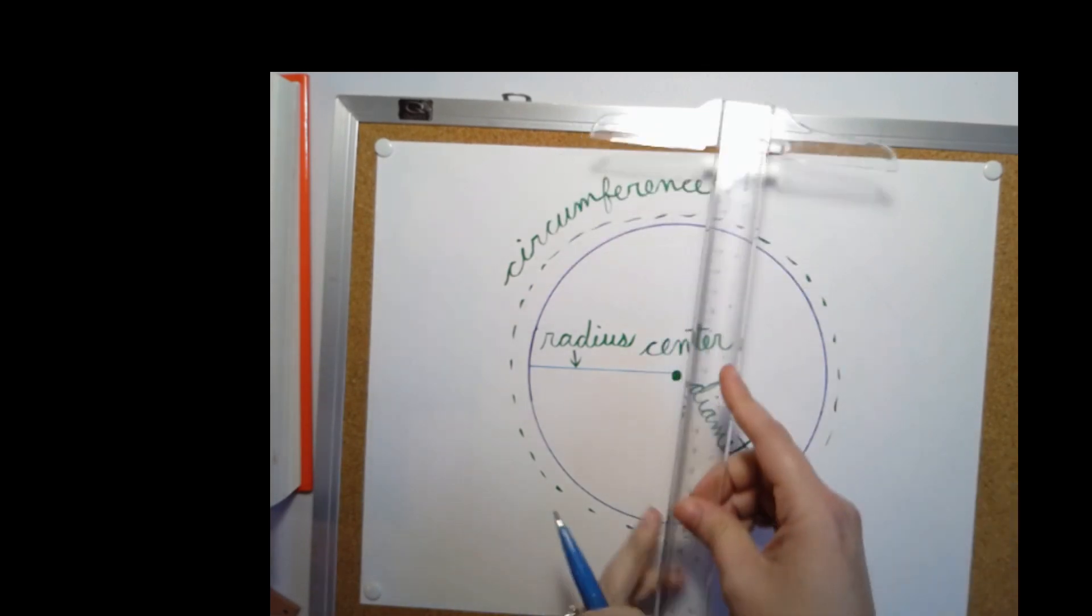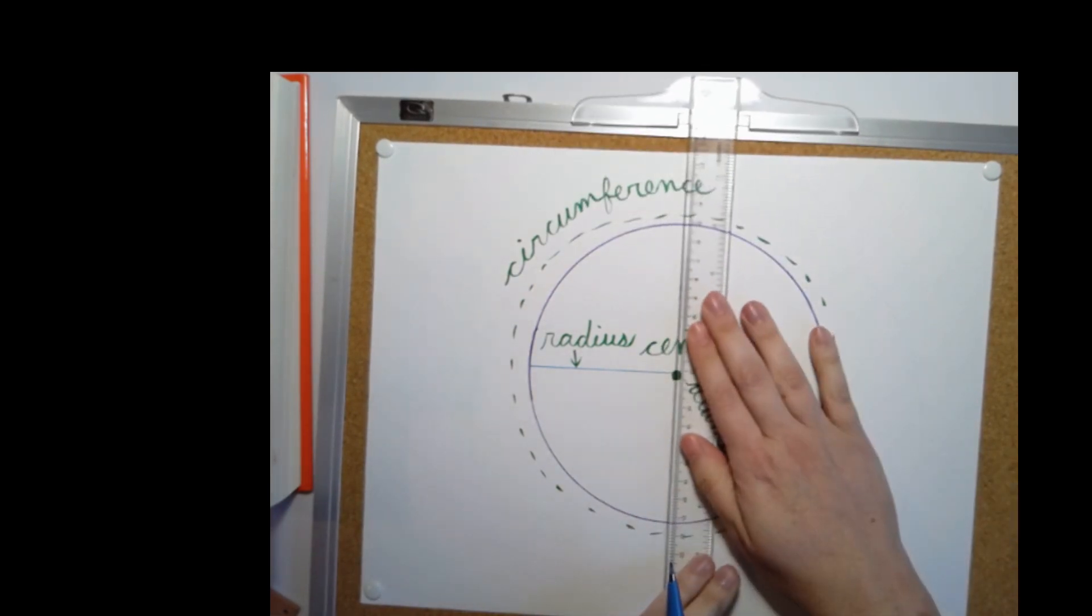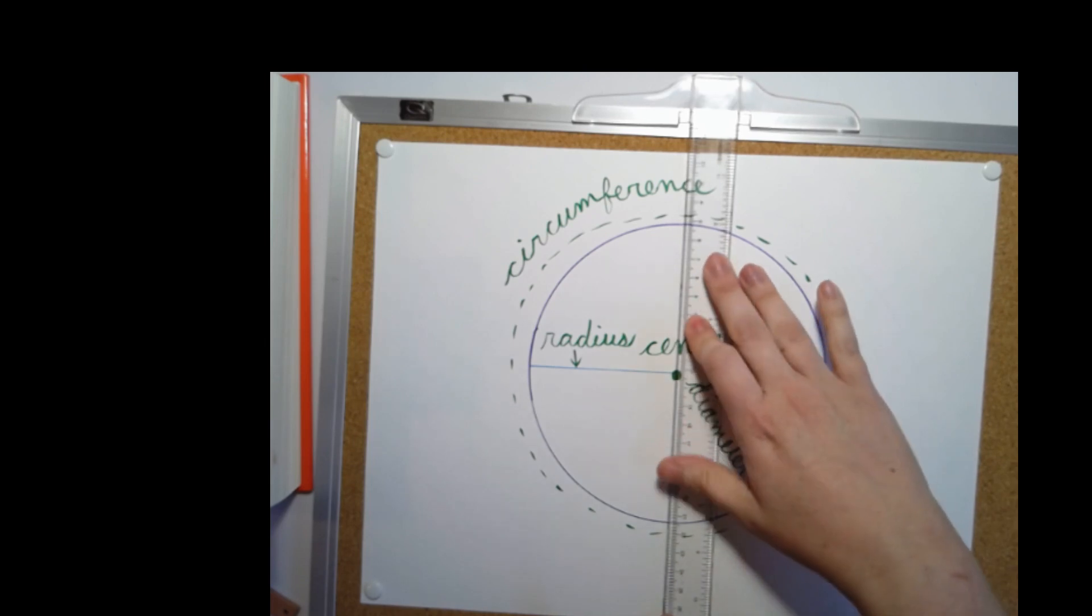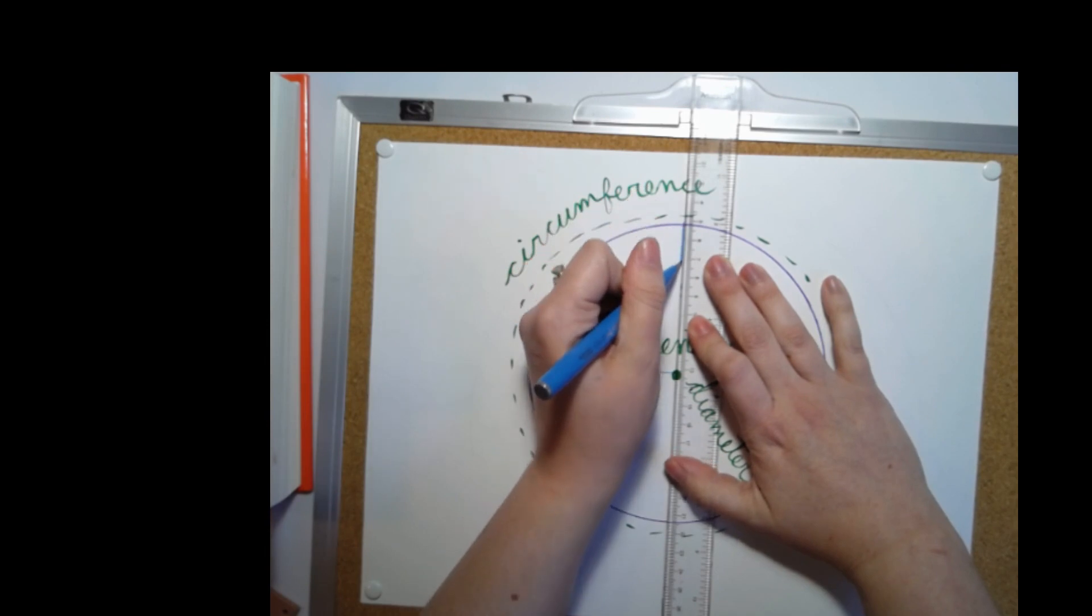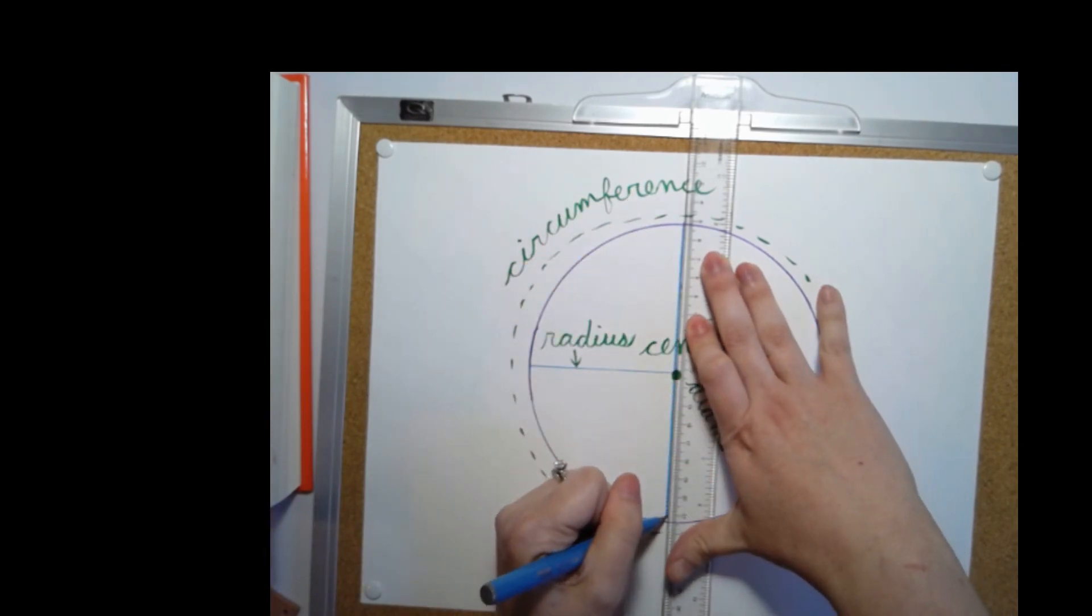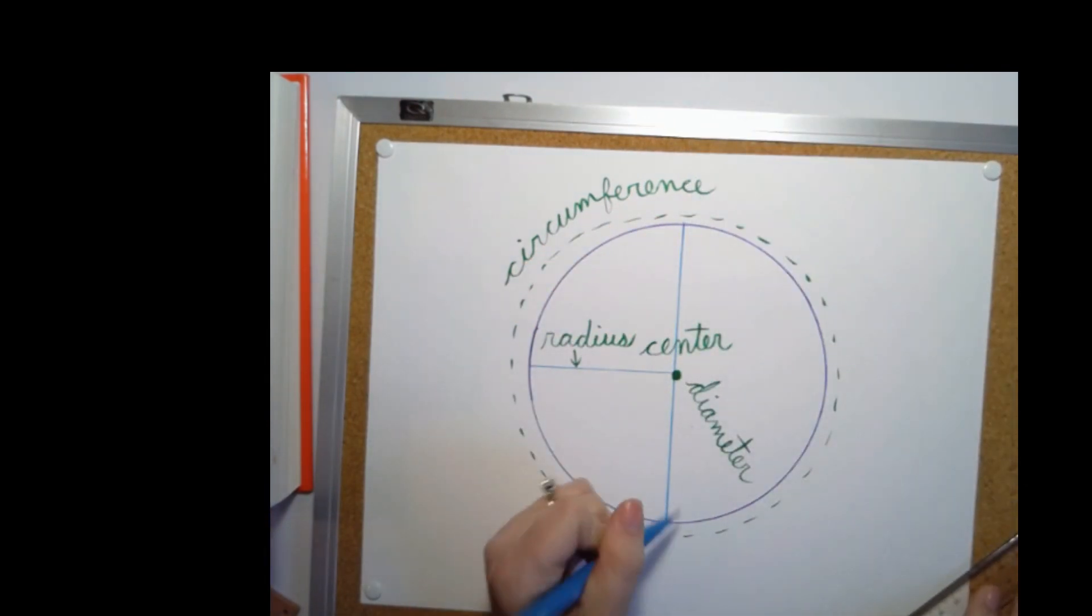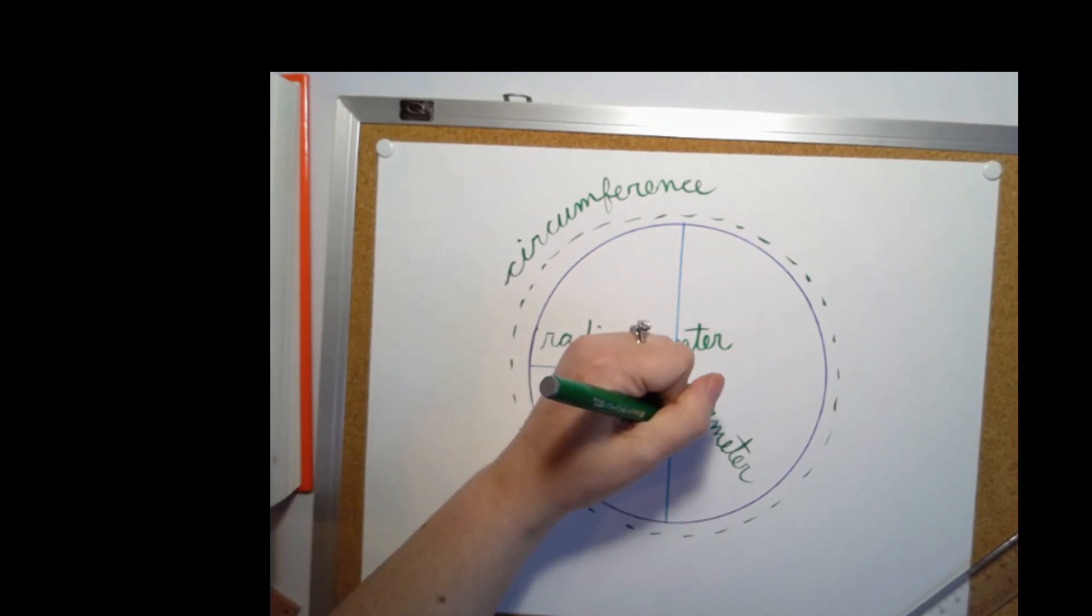And now I can draw my diameter. So it goes from one side to one perimeter spot of the circle, through the center to another perimeter spot on the circle. That is the diameter.